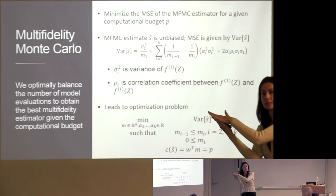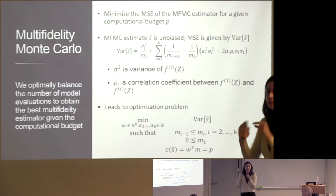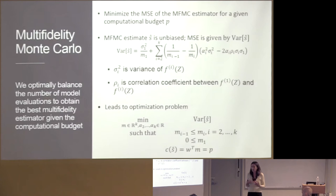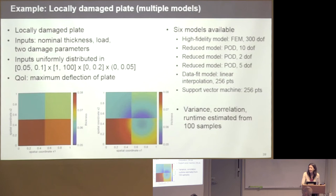The optimization problem has an analytic solution that reveals interesting things about the value of models: their cost-benefit ratio. If you have a model that's not very good but is quite expensive, throw it away. Even if a model is not very correlated, if it's really cheap, it might be worth using. Back to that plate model, now with four inputs — nominal applied load and two damage parameters — with assigned distributions. Here's a bucket of models: high-fidelity finite elements; three POD reduced models with different numbers of modes; a data-fit linear interpolation model; and a support vector machine. The task: estimate the expected value of the maximum deflection of the plate.